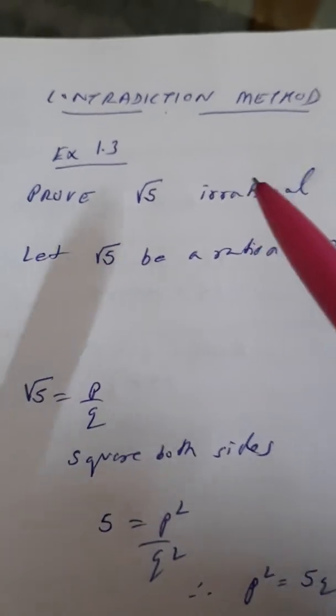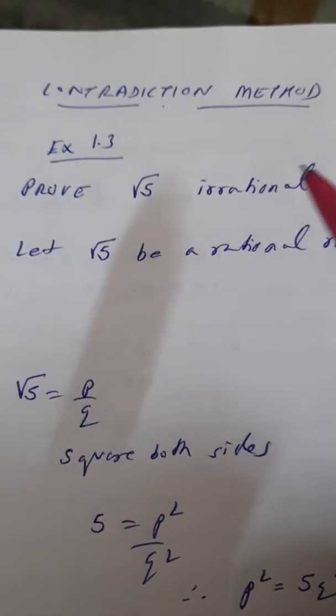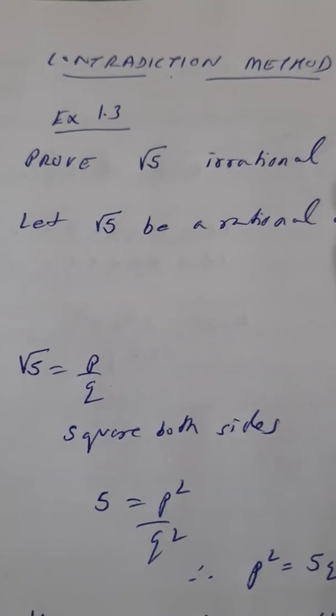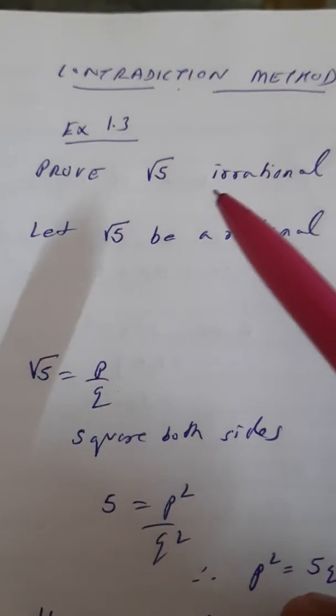So this is an important type of question. Instead of root 5, you can get root 2, root 3, root 7, whatever. There are two solved examples also. You need to try out those two questions because the numbers can obviously change in the exam.